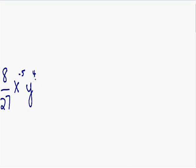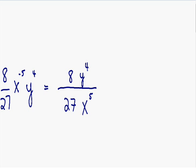Notice how we have a negative exponent in our final answer, and that is not okay — you can never leave your final answer with a negative exponent. A negative exponent in the numerator becomes a positive exponent in the denominator. So this x with a negative 5 exponent in the numerator can be rewritten as x to the positive 5 in the denominator. Everything else stays the same: 8 stays in the numerator, 27 stays in the denominator, and y to the 4th stays in the numerator. This is our final answer: 8y to the 4th over 27x to the 5th.